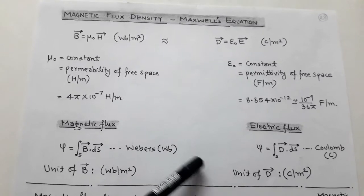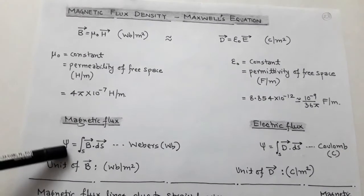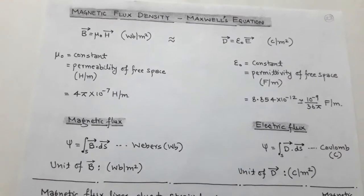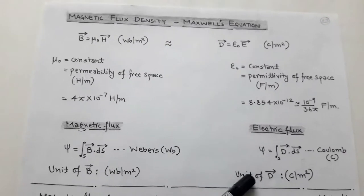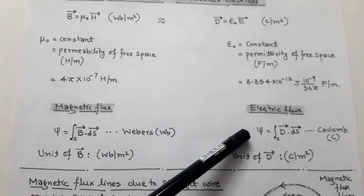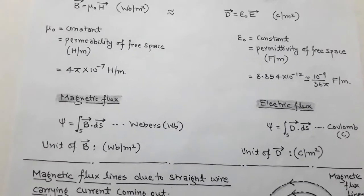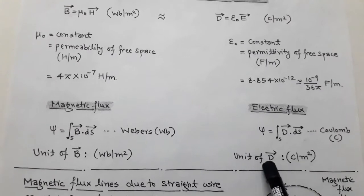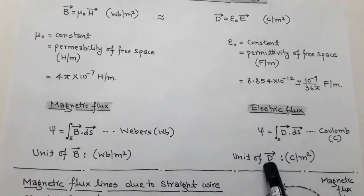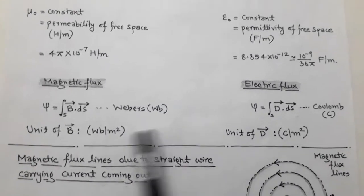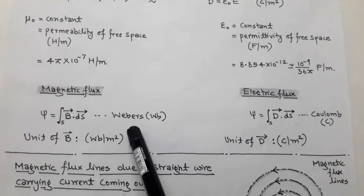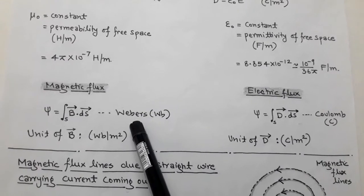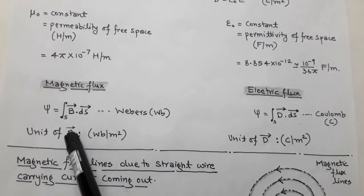The magnetic flux density is related to the magnetic flux, just as electric flux density is related to electric flux. The electric flux is denoted by the surface integration of D·dS and its unit is coulomb, giving the unit of electric flux density D as coulomb per meter square. Similarly, the magnetic flux is denoted by the surface integration of B·dS and its unit is Weber, so the unit of magnetic flux density B is Weber per meter square.